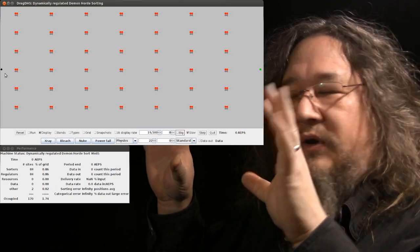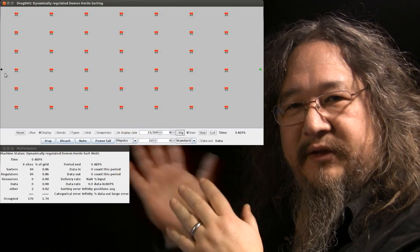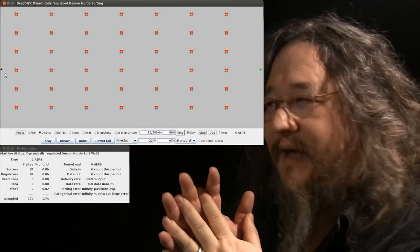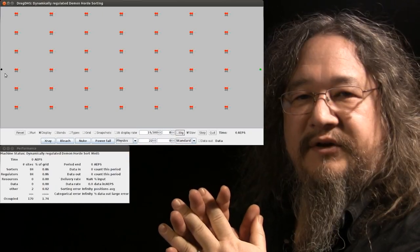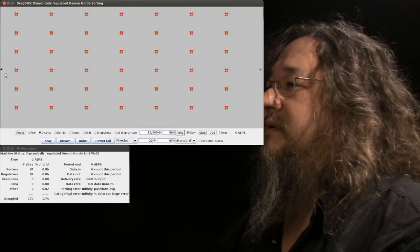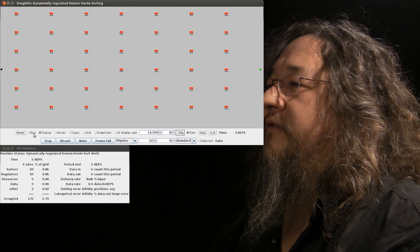So we'll see the grids grow. As the input grids grow, they will start generating data, the blue atoms. And then the sorters will do their diffusion, and the DREGs will do their diffusion, and create res, and so on. So let's take a look at its behavior.